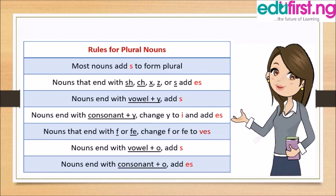You can also form the plural by adding -es to nouns that end with a consonant letter plus the letter o. For example, potato becomes potatoes, arrow becomes arrows.